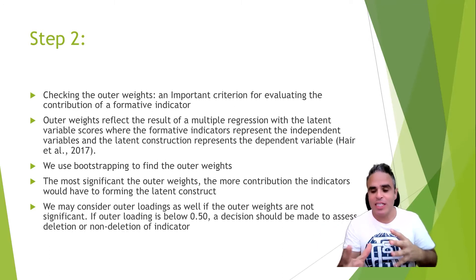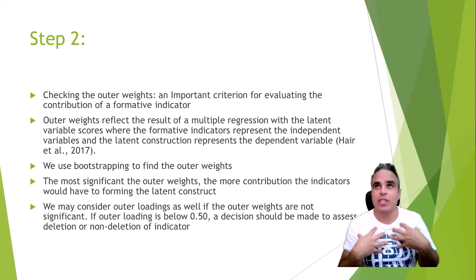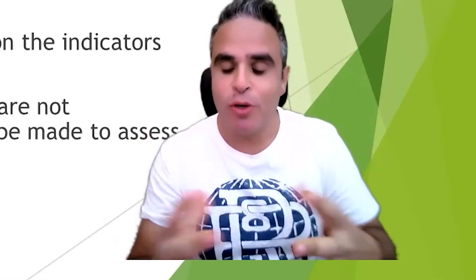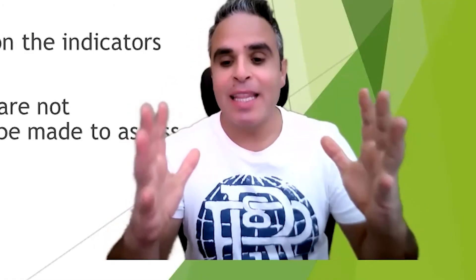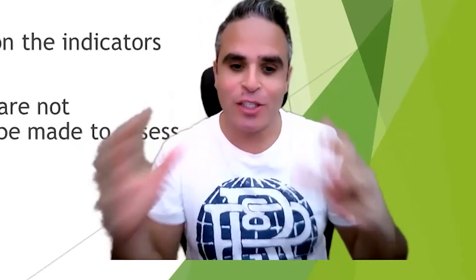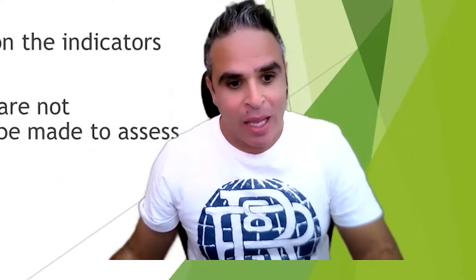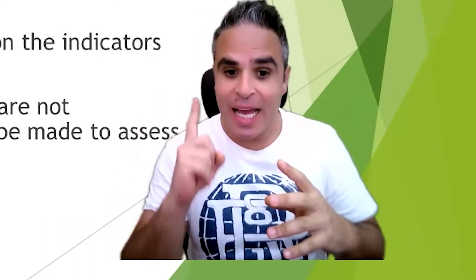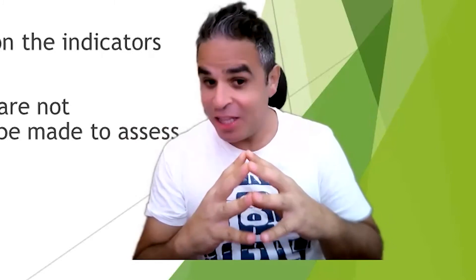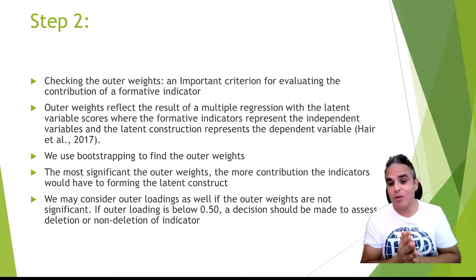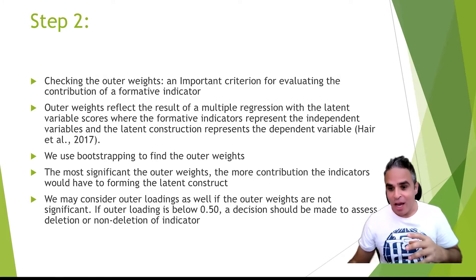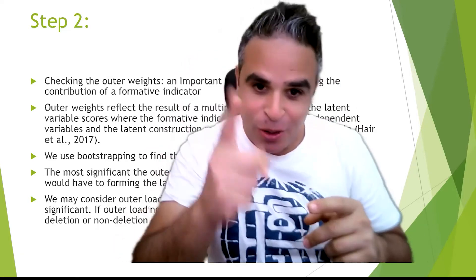To check for outer weights, I use bootstrapping. The more significant the outer weight, the more contribution — for instance, if job loss has a big significance on life stress, it is contributing to life stress. The more the weight, the more the significance or impact of that indicator on the latent construct. We may also consider outer loadings if the outer weights are not significant enough. If the loading is below 0.5, we make a decision whether to delete the indicator or leave it.